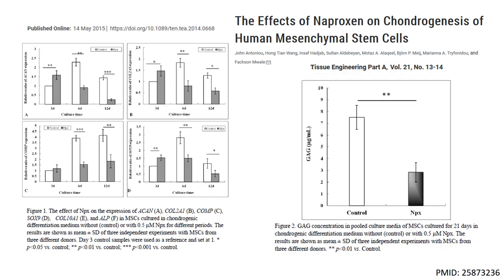Not all differentiation events are supported by the presence of NSAIDs. In a 2015 study published in Tissue Engineering, the authors examined the effects of naproxen on chondrogenesis of human MSCs. Initially, after three days in culture, expression levels of cartilage-specific genes such as Aggrecan, Collagen 2, and Sox9 are significantly increased over their respective control. However, after a few more days in culture, gene expression levels of all these cartilage markers are significantly less than that of the positive control. Additionally, after 21 days in culture, the presence of glycosaminoglycans, a positive marker for cartilage differentiation, is significantly reduced in cultures treated with naproxen.